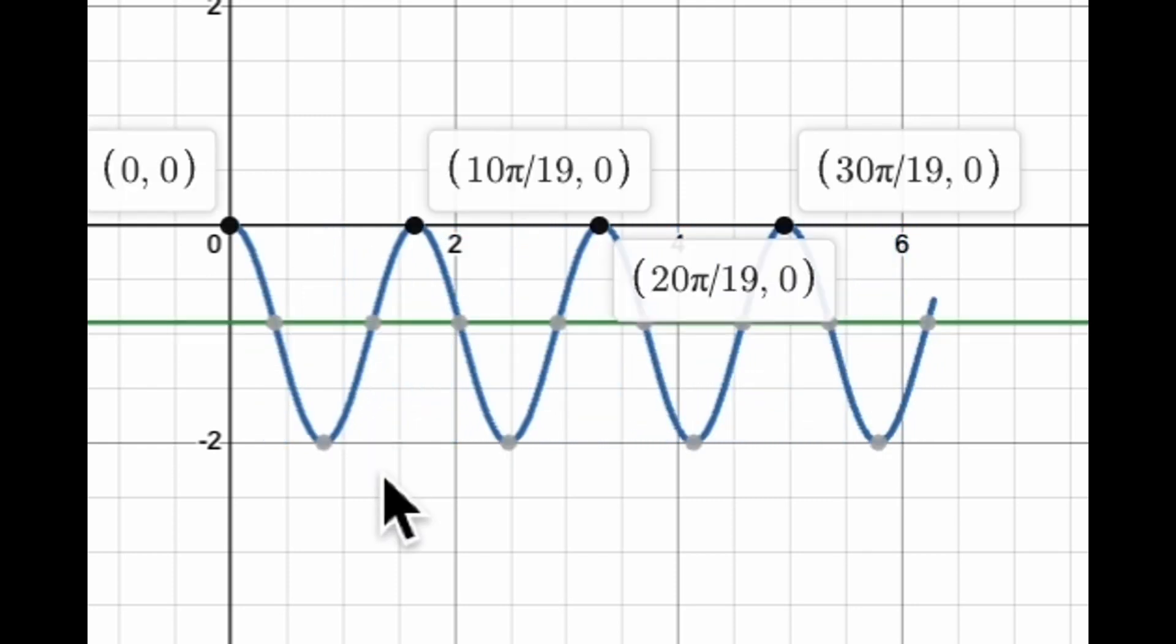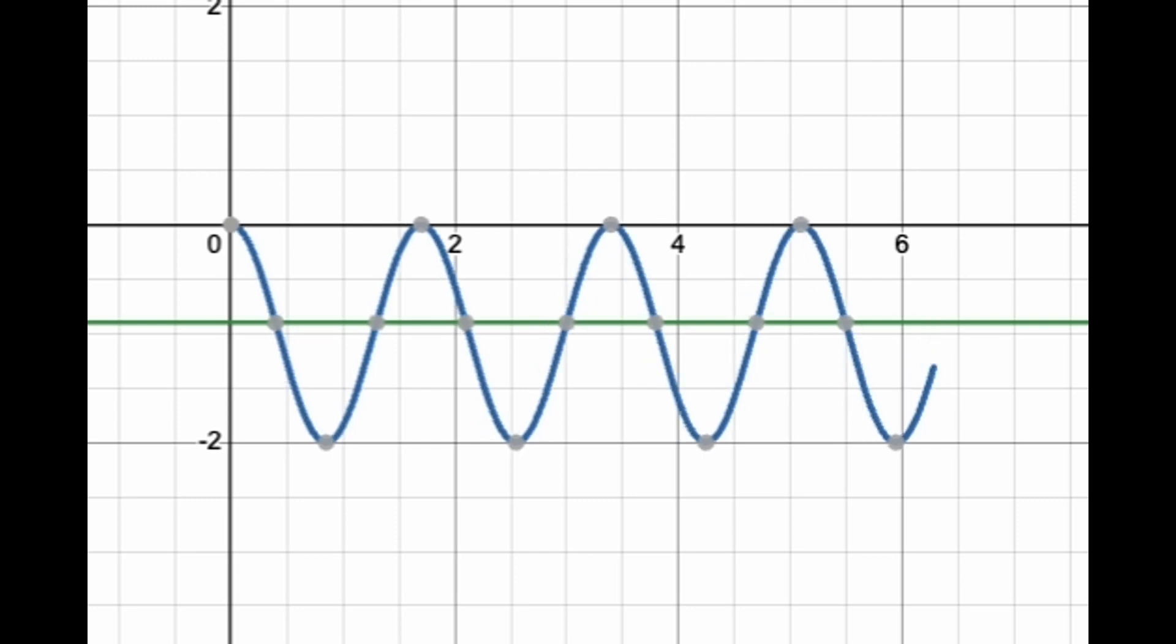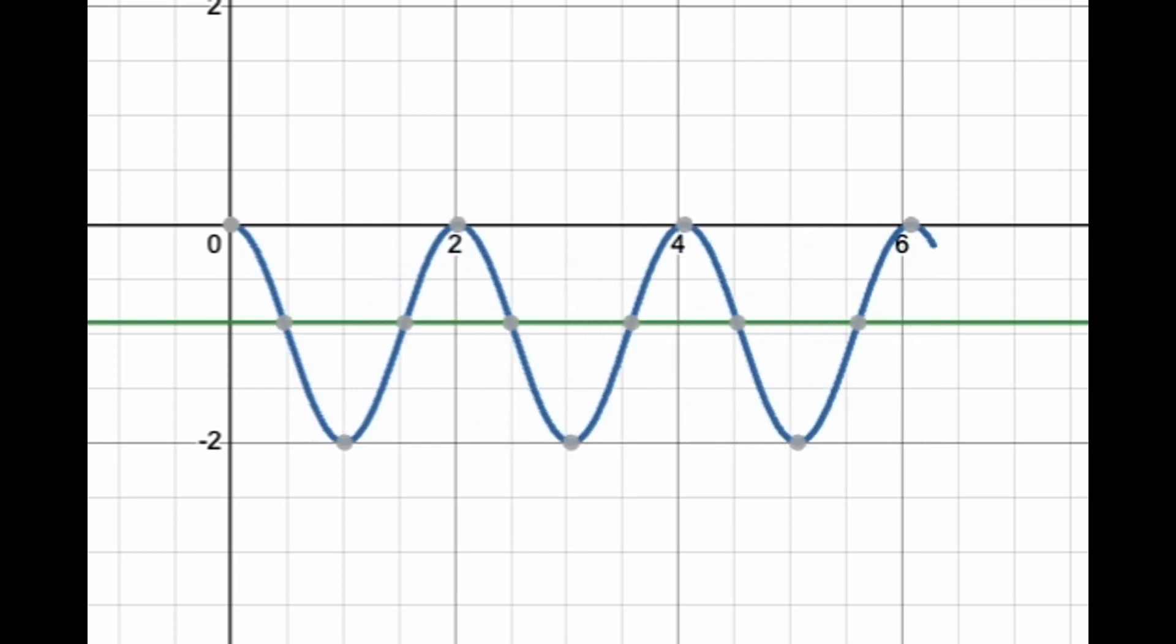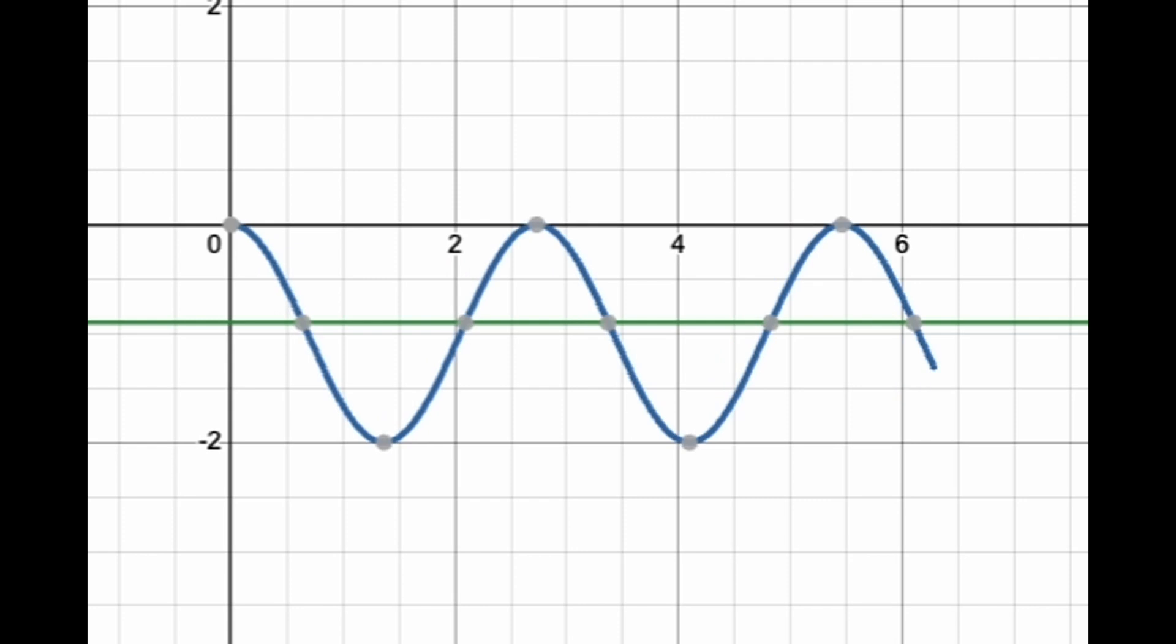We're looking for the range of ω where the zero point here is going to be 3. So we know that it cannot exceed 3, because if you have more than 3 cycles, then you're going to have more than 3 zero points. So it has to be between 2 and 3.